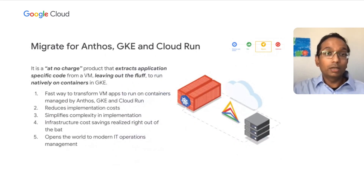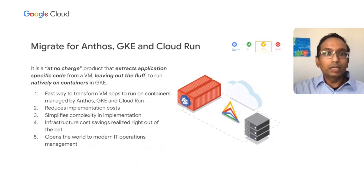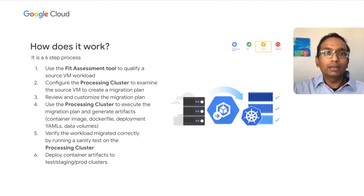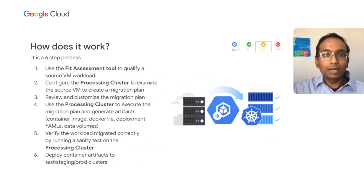Many customers also want to fast forward to modernizing their applications. With Migrate for Anthos, you can transform your VMs to containers managed by Anthos. With Migrate for GKE, you can transform your VMs to containers managed by GKE in either standard mode or autopilot mode. Finally, you can transform your VMs to containers managed by Cloud Run so you can get started with the serverless architecture right off the bat. This happens in a simple six-step process: you qualify a VM, configure the processing cluster to examine the source VM and create a migration plan that you review and customize. Then you use the processing cluster to execute the migration plan and generate your deployment YAMLs, container images, and data volumes. You verify that the workload is migrated correctly by running some tests, and finally deploy the container artifacts to your testing, staging, and production clusters. You can migrate from VMware on-premises, AWS, Azure, or even within GKE.